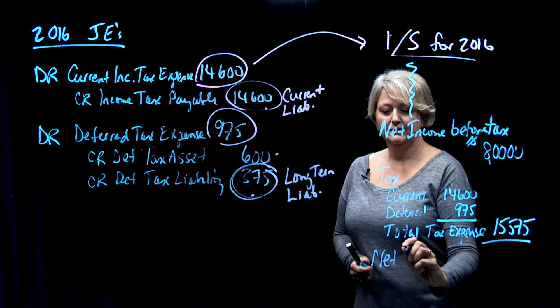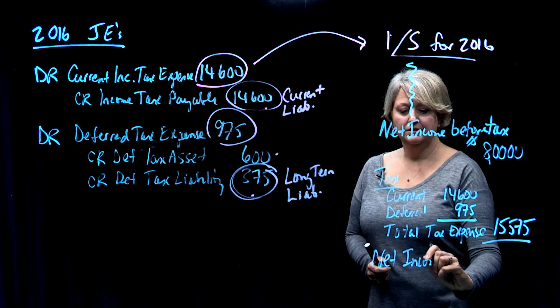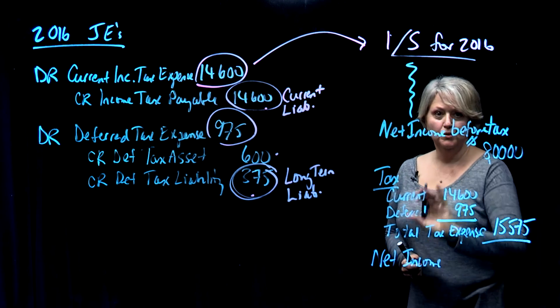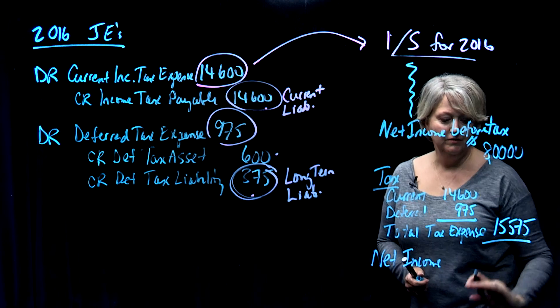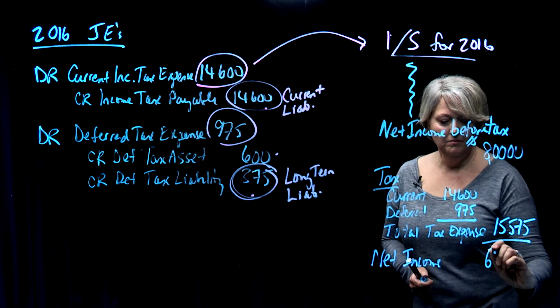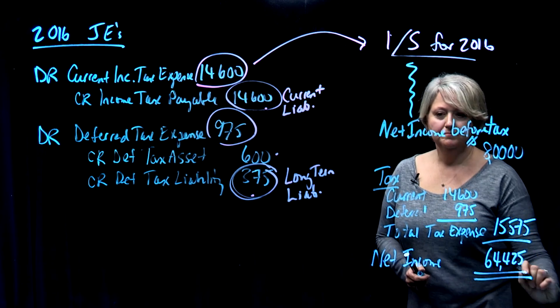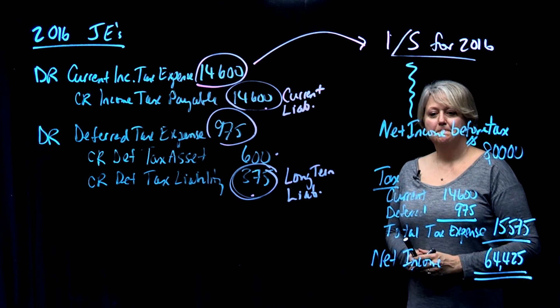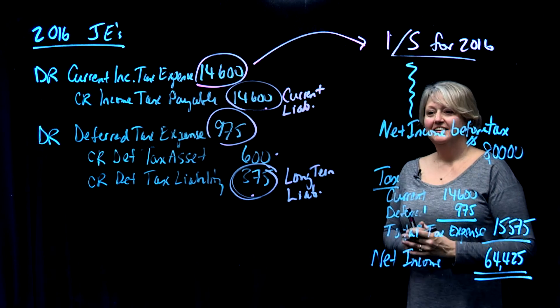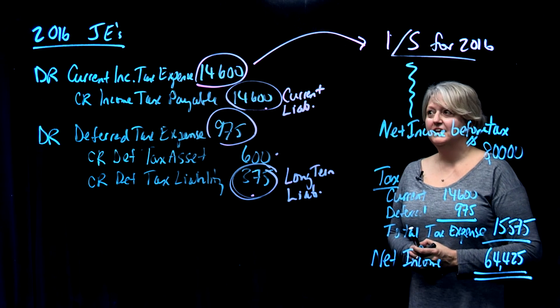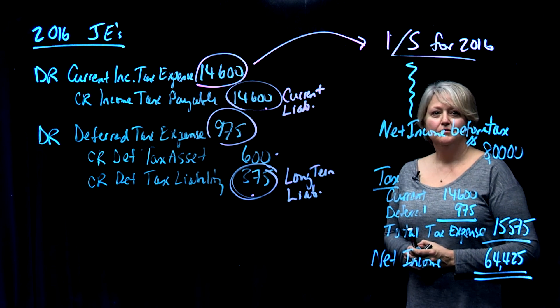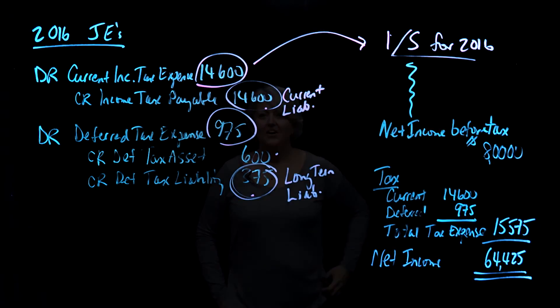So net income before taxes less the total tax expense, which is made up of both pieces—the current and the deferred—$15,575, will give you a net income of $64,425 after taxes. And that is the completion of the tax accounting for 2016 for this company.